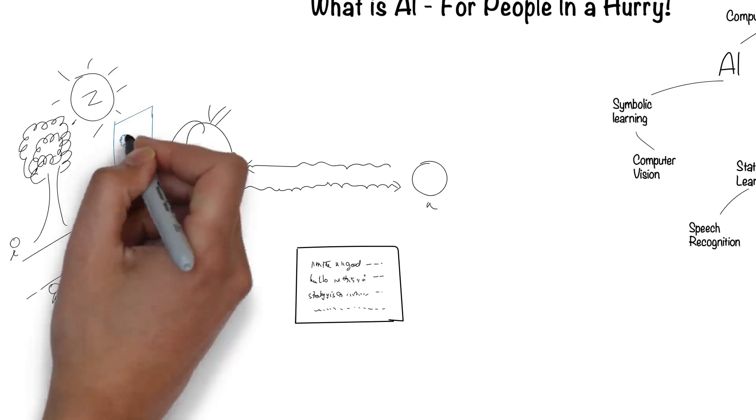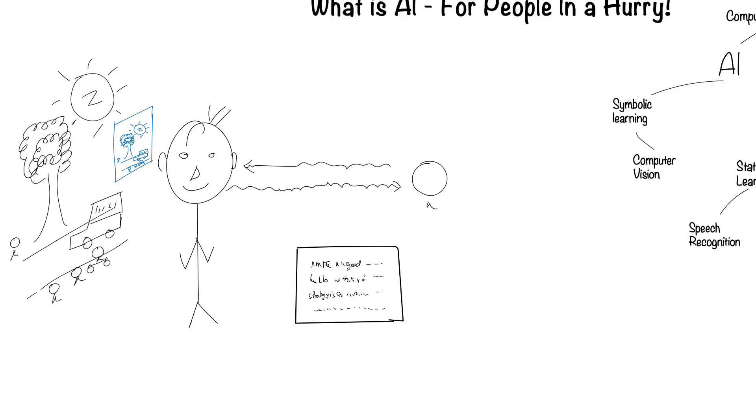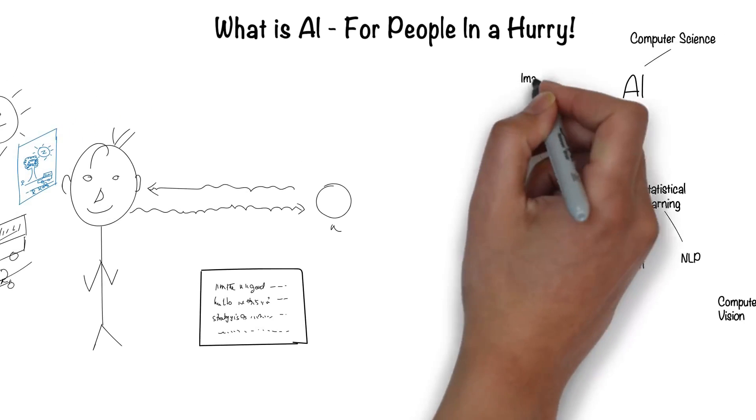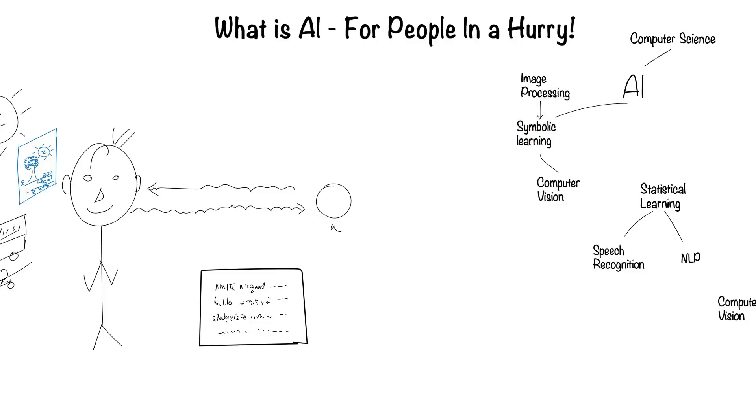Humans recognize the scene around them through their eyes, which create images of that world. This field of image processing, which even though is not directly related to AI, is required for computer vision.